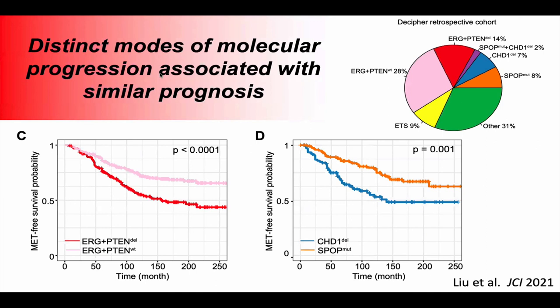Looking at the same retrospective cohorts, we see the breakdown of different states — early and late, ERG positive, PTEN deleted, SPOP mutant, CHD1 deleted. When we look at metastasis-free survival according to these states, the early states both do considerably better and the late states both do considerably worse, consistent with the idea that acquisition of a second hit is associated with higher metastatic potential. Secondly, if you superimpose these curves, they're nearly identical — suggesting it doesn't matter which subtype the tumor is, but it matters more where along the timeline within that subtype it is.